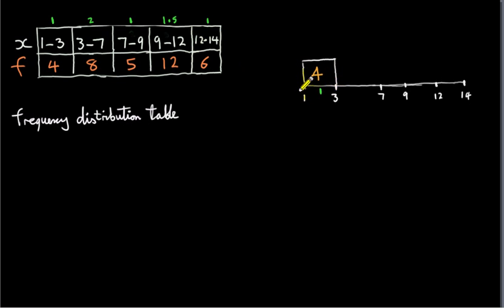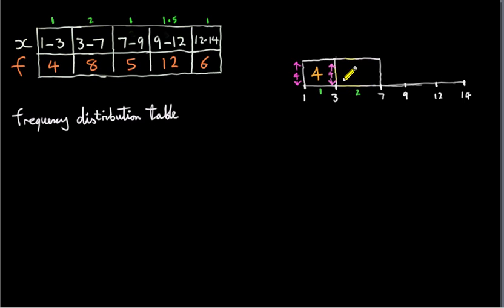Our first rectangle has a width of 1, so its height must be 4, because 1 times 4 is 4. That's how we calculate the heights for our rectangles — we take the frequency and divide by the relative width. So 4 divided by 1 is 4. For the next interval, 8 divided by 2 is 4, so the next rectangle also has a height of 4. The area equals the frequency, so the frequencies are the areas of the rectangles.